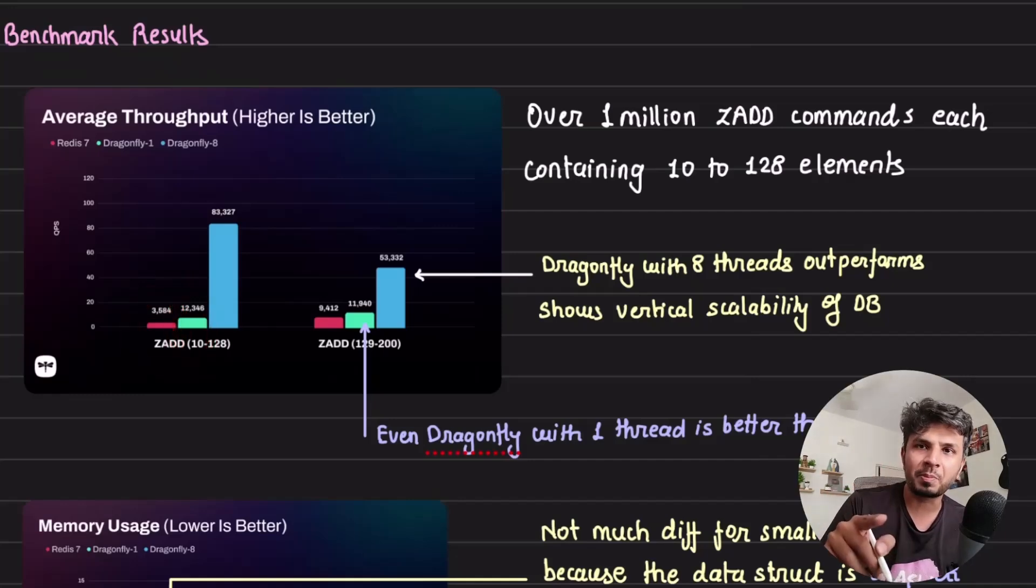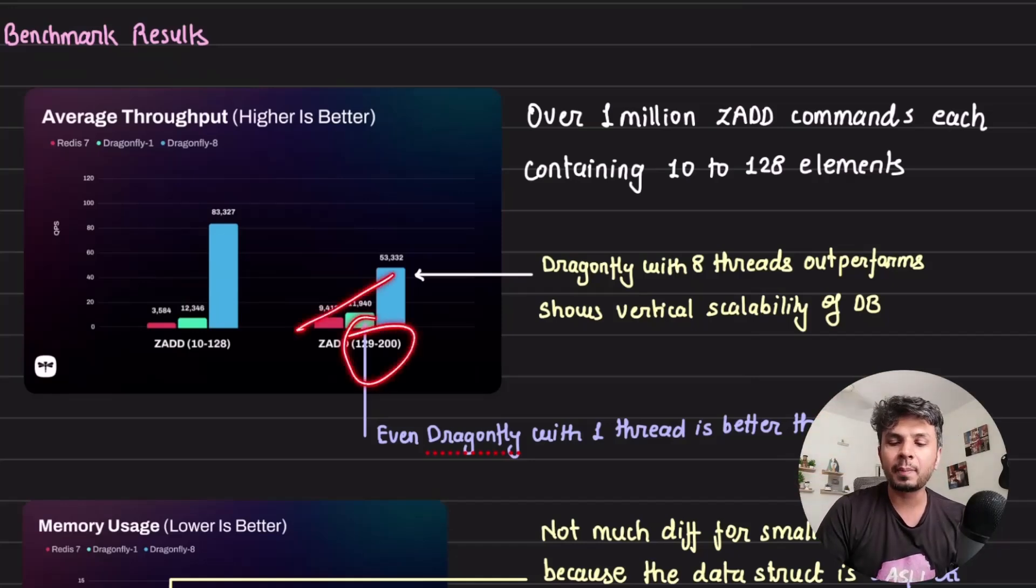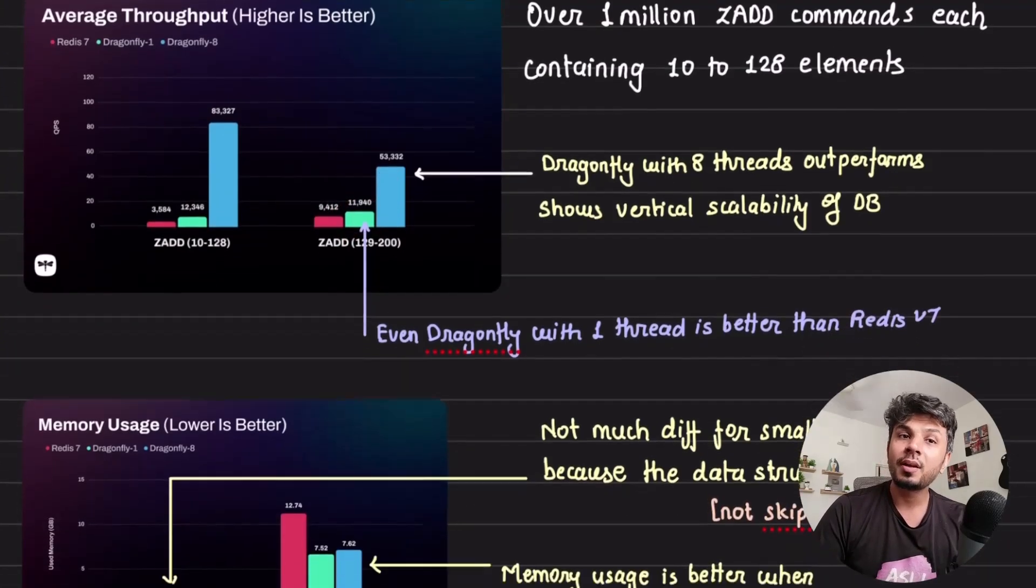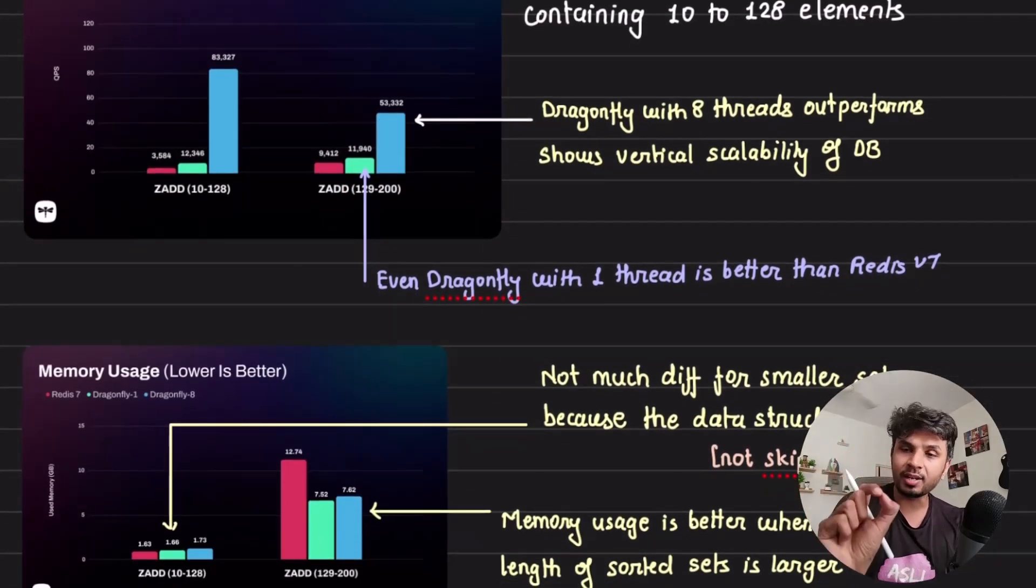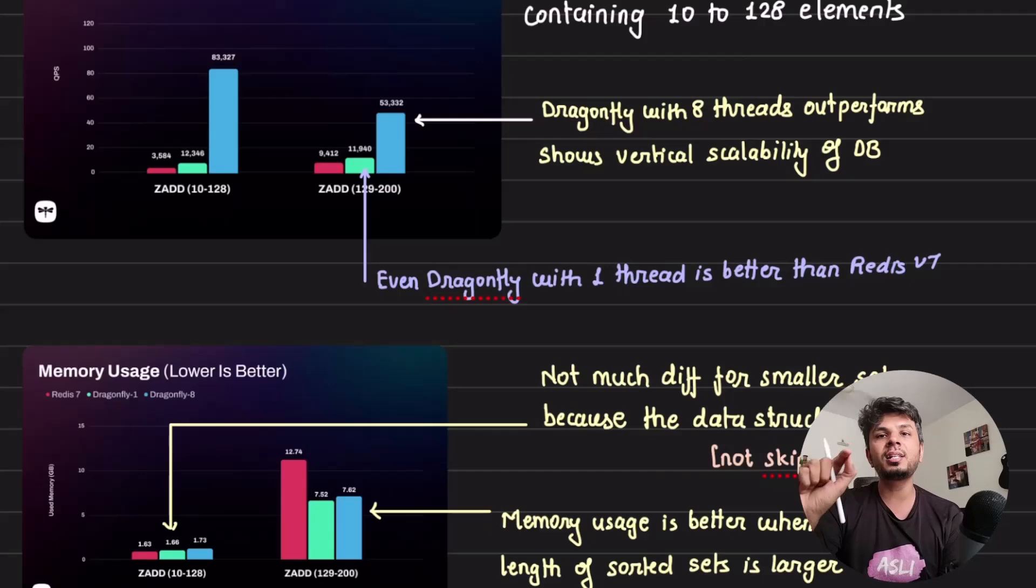Single threaded Redis was capped at 3.5k QPS, 12k for single threaded DragonflyDB, which is still 4x better, and 83k for 8 thread DragonflyDB implementation. Even for larger sets, the pattern still holds true. DragonflyDB with a single thread is still better than Redis v7, which is amazing.